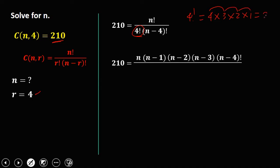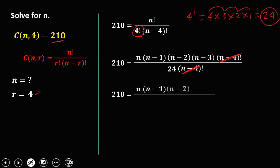So 4 factorial equals 24, times (n minus 4) factorial. We can eliminate the (n minus 4) factorial. So we have 210 equals n times (n minus 1) times (n minus 2) times (n minus 3) over 24.